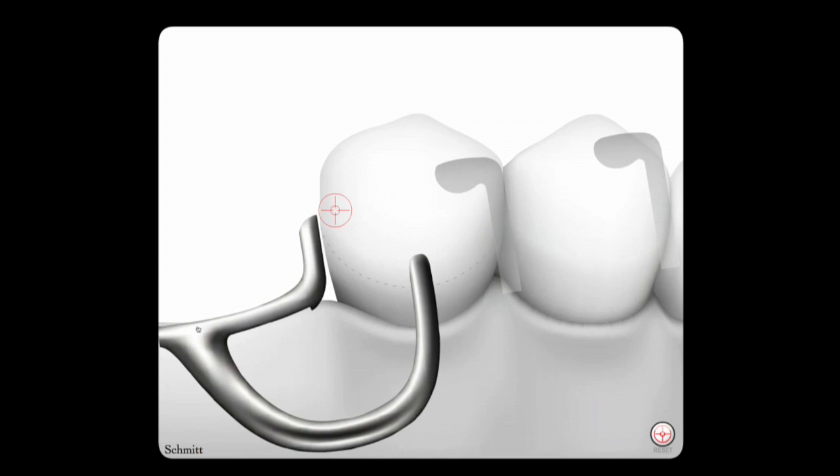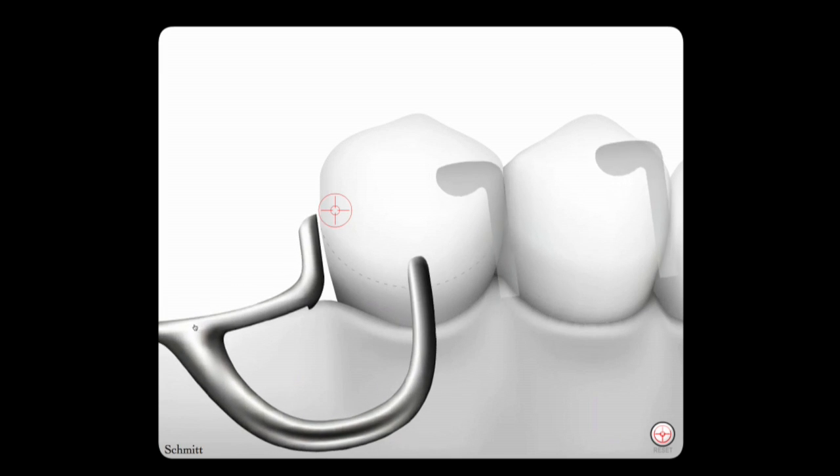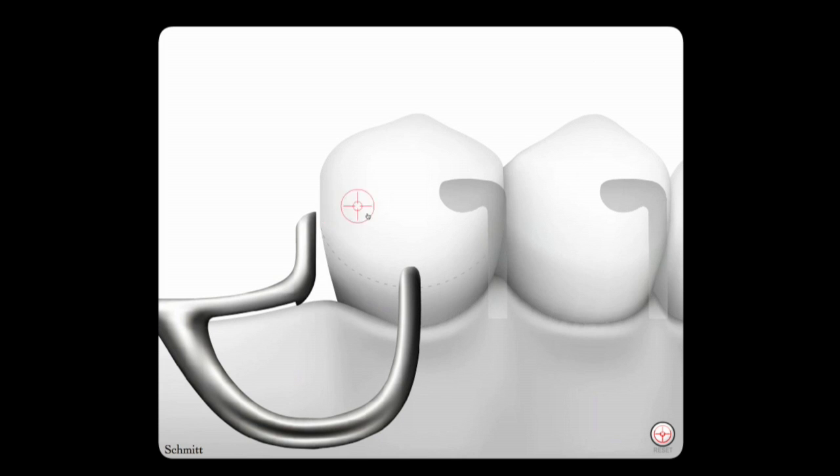Note how much higher the indirect retainer moves. It actually moves above the marginal ridge on the first premolar in this animation. Note also that the tip of the eye bar moves upward, engaging the tooth and placing force on it.